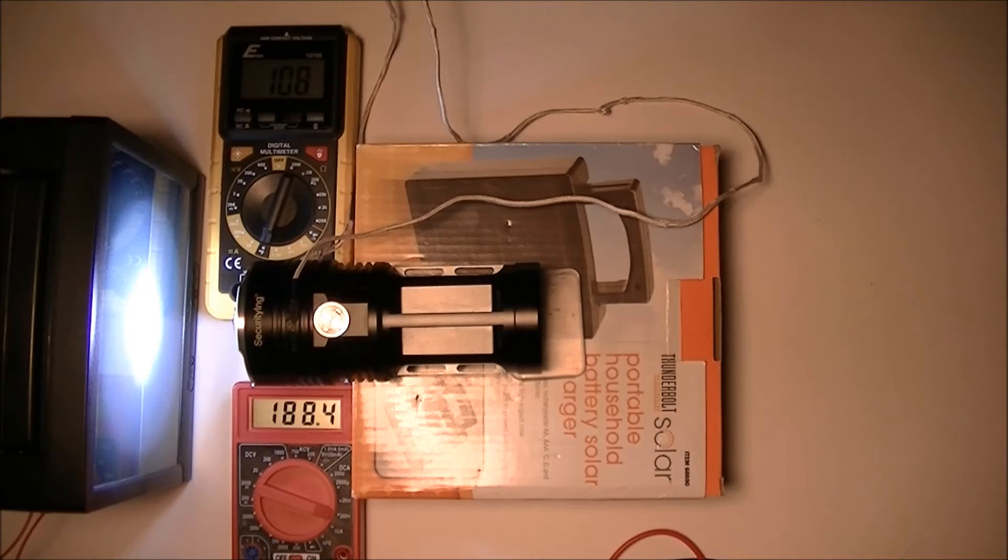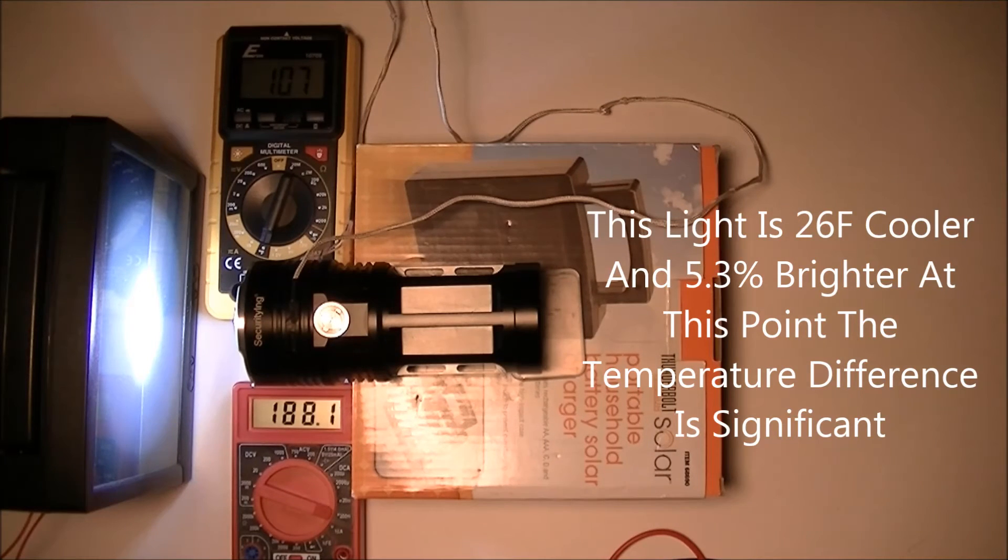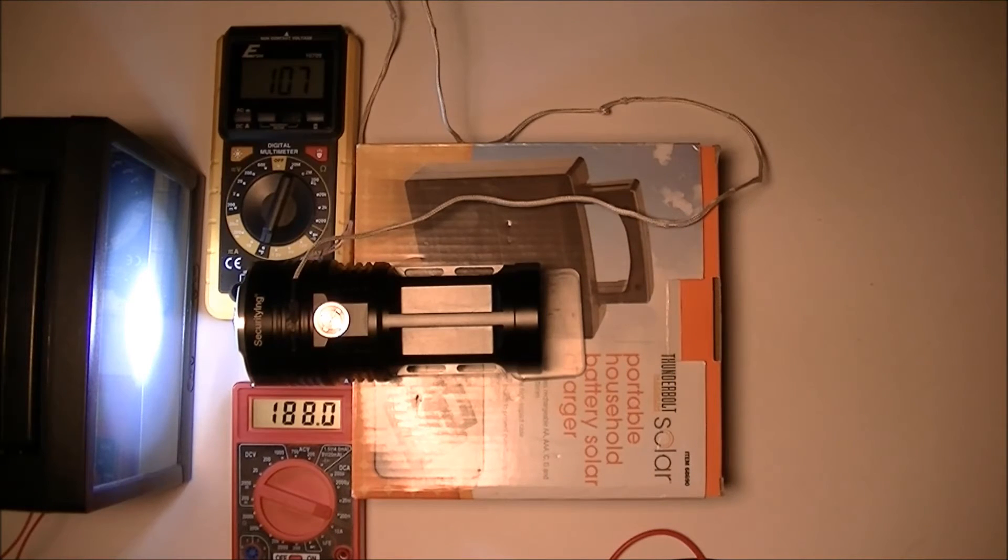Okay, we're at 10 minutes, 46 seconds. And we got 107 degrees Fahrenheit and 188.3 milliamps of output, which is still more than the other flashlight which had 133 Fahrenheit and 178 milliamps of output at this point. So the other flashlight was hotter and produced less light. This one is actually producing more energy on that cell and running a lower temperature.